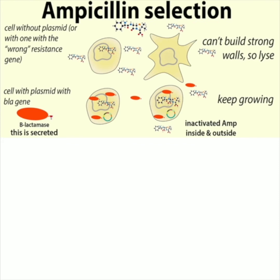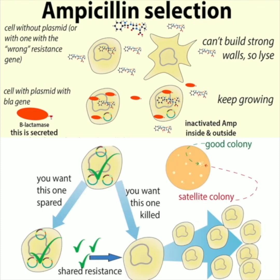A problem to be aware of with ampicillin selection is that the beta-lactamase gene product actually gets secreted. It can provide resistance to nearby colonies, and this is bad because those colonies might not even have the plasmid in them — they get the benefit anyway. Basically, ampicillin resistance is going on the offensive and attacking the antibiotic before it can even get into the cells, but this prevents it from killing some of the cells you want killed. This is mostly a problem if you overgrow the plates. Typically, these false colonies will form as little satellite colonies nearby the big gooey colony — those probably don't have the plasmid and have just gotten help from the secreted beta-lactamase.